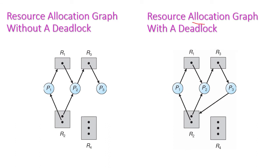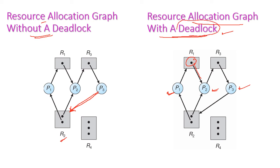Now let us see another example of a resource allocation graph with deadlock. This example is taken from our previous example. Now the scenario is P1 is giving a request for R2. All the processes are holding one resource and waiting for other resources that are already held by some other process. Hence, none of the processes will complete their execution, and the system will be in a deadlock state — an unsafe state.